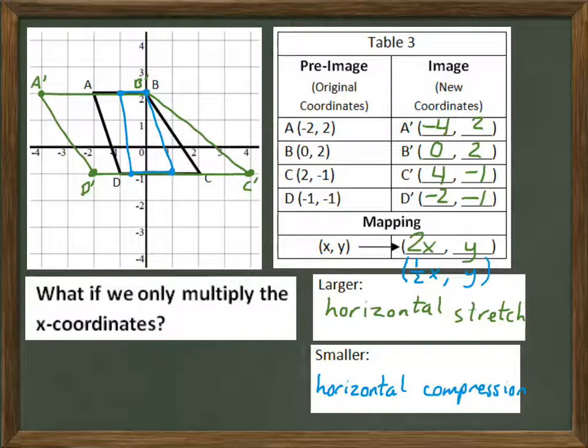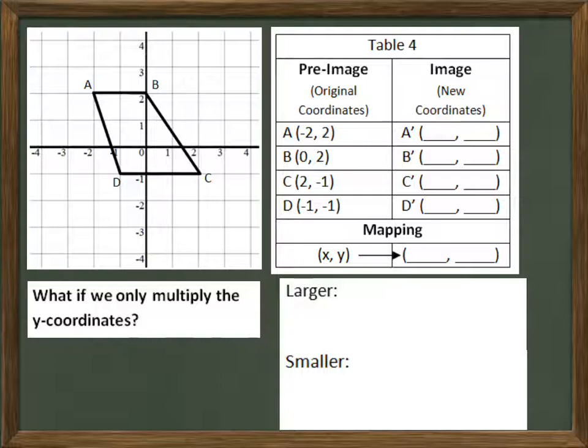So what about if we multiply only the y-coordinates? Well, here we go. So a mapping for that would look like x, 2y. We've multiplied all the y-coordinates by two. It could be some other number, it's just two is a convenient one for a smaller picture.